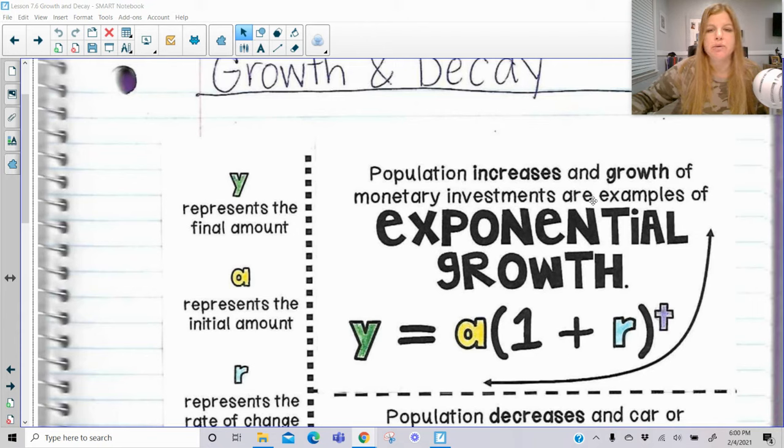First of all, population increases and growth of monetary investments are examples of exponential growth. And the formula is given by this: y equals a times 1 plus r to the t power. And over here on the left I have a key for what each variable means. So y represents whatever the final amount of, let's say an investment or some kind of growth value is going to be. A represents whatever the initial amount was, so whatever the starting amount is.